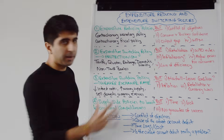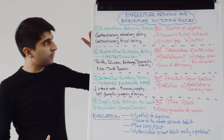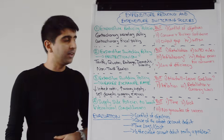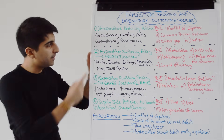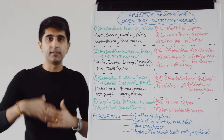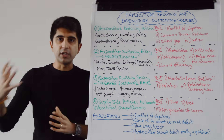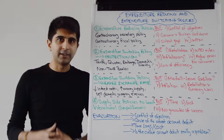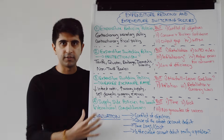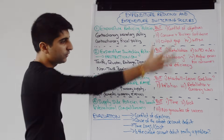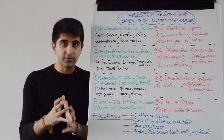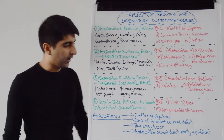So, to summarise: expenditure reducing policies are designed to reduce spending on imports by reducing aggregate demand in the economy. Expenditure switching policies are designed to switch spending away from buying imports towards buying domestic goods and services. And supply side policies aim to boost competitiveness. That really is the heart of your essay and the heart of a debate on this topic.